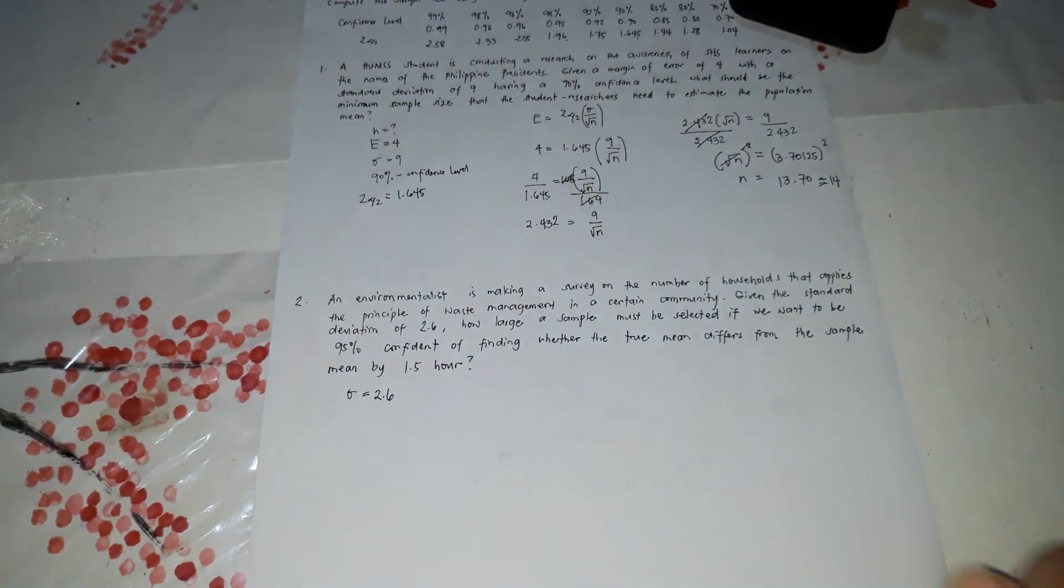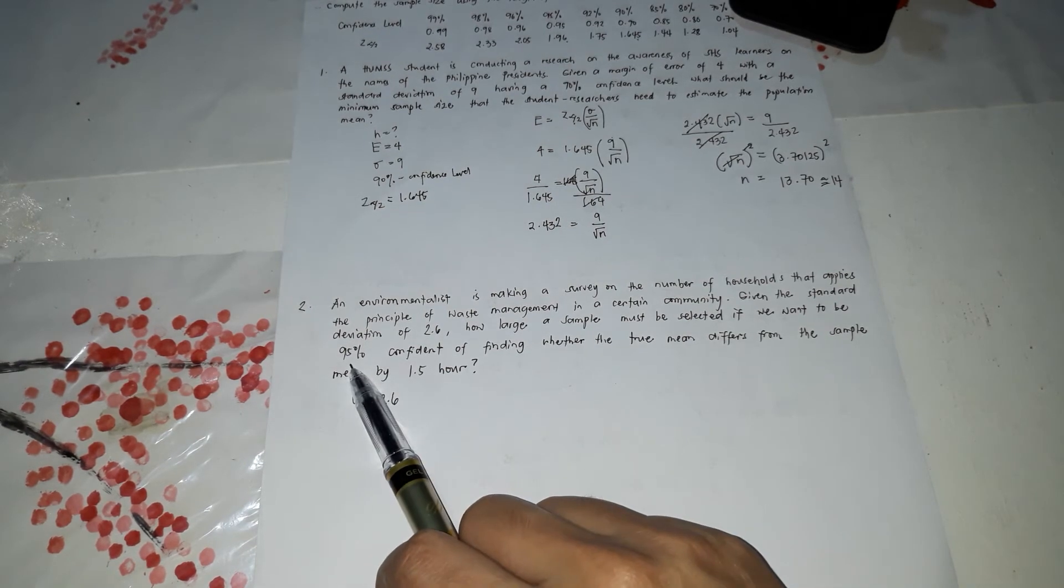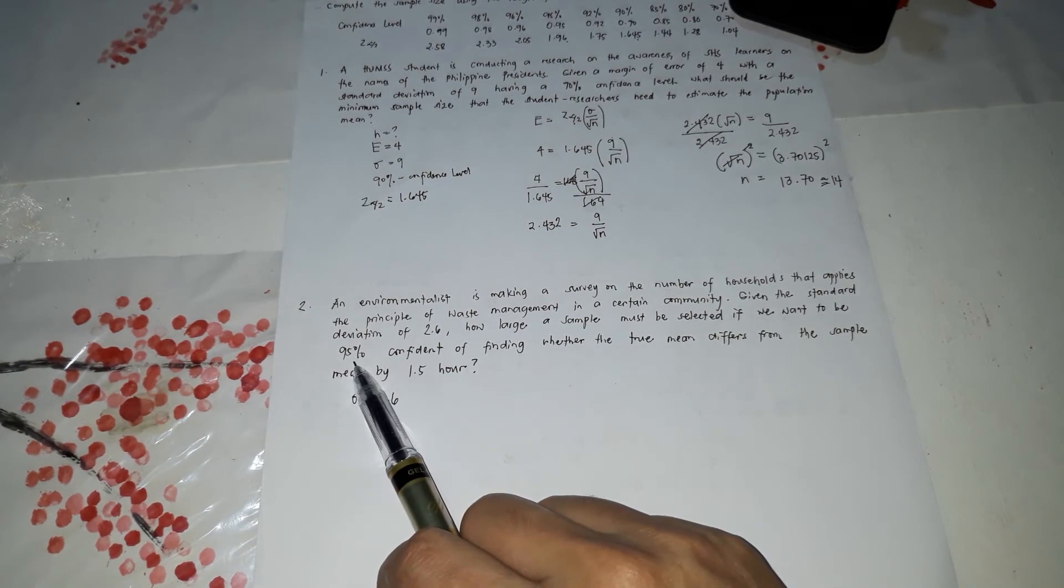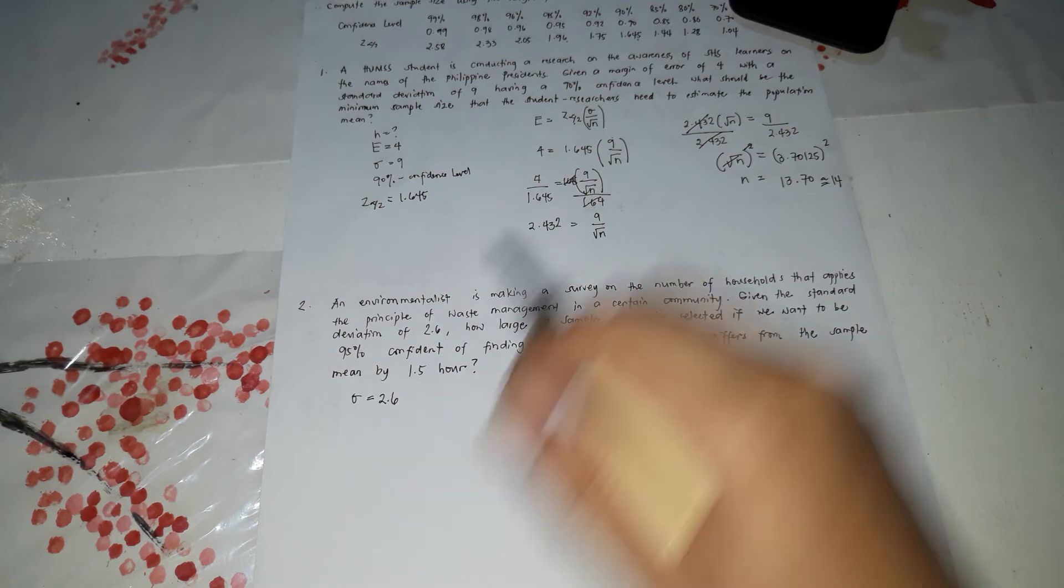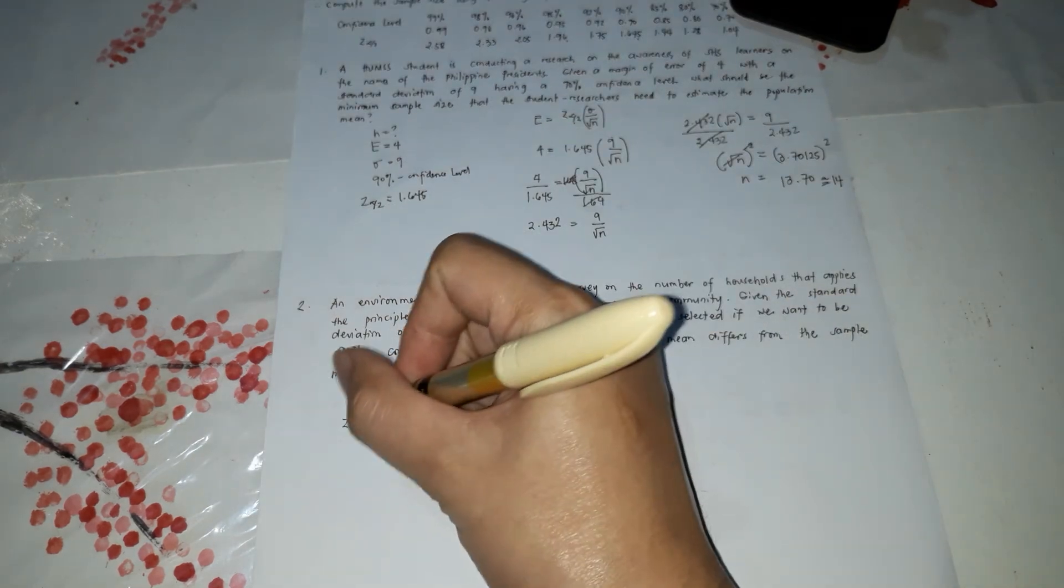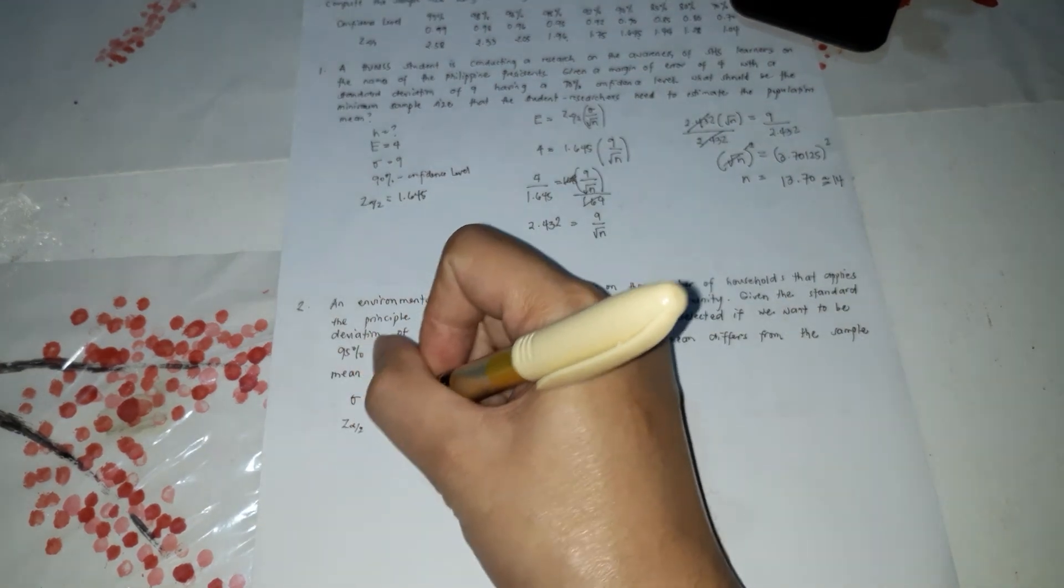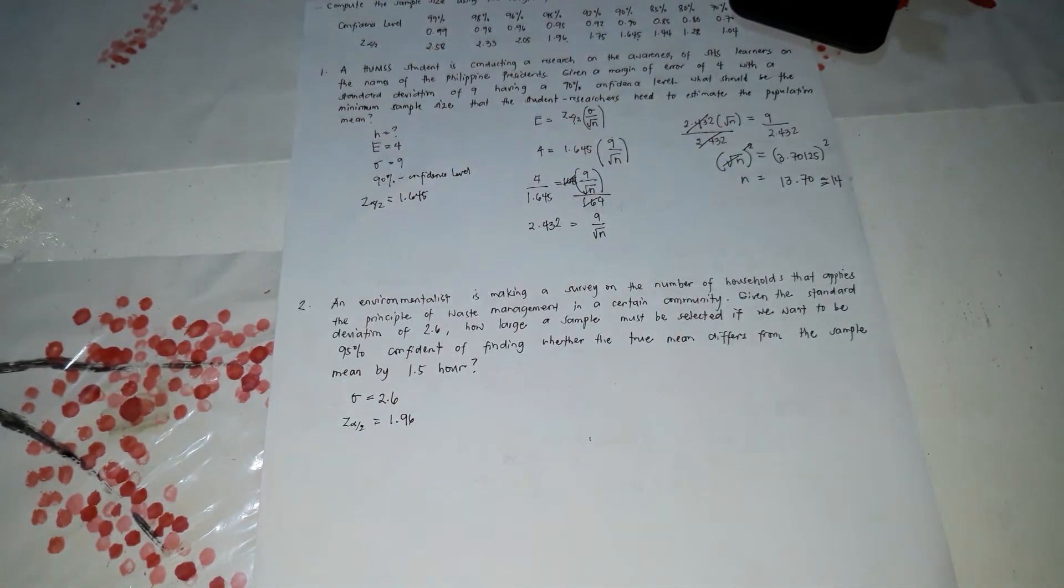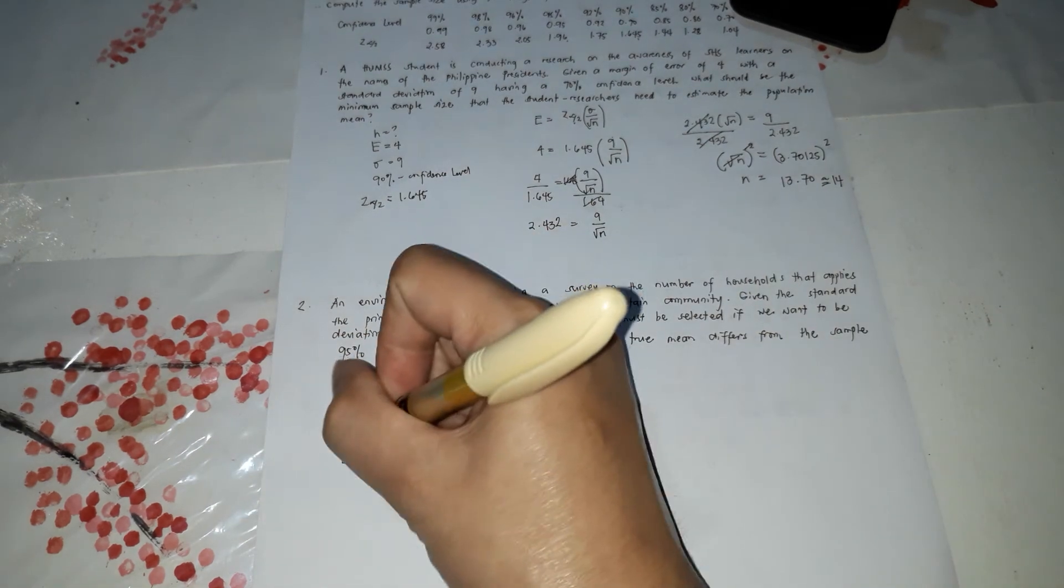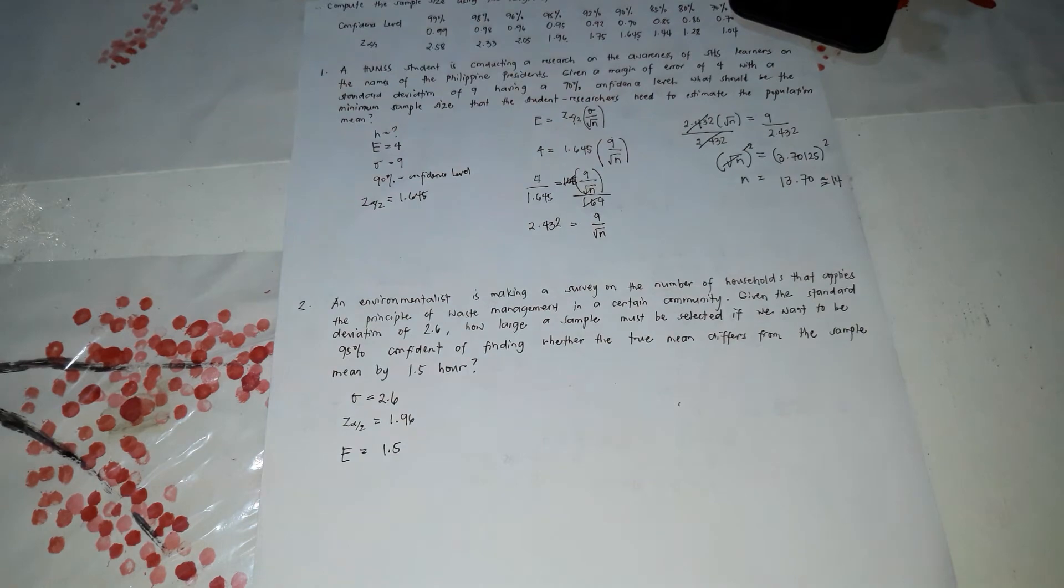So our given in here are the standard deviation of 2.6. The confidence level is 95%. So based on the table, if it's 95%, the Z is 1.96. So Z coefficient. Next is the E, which is equal to 1.5.